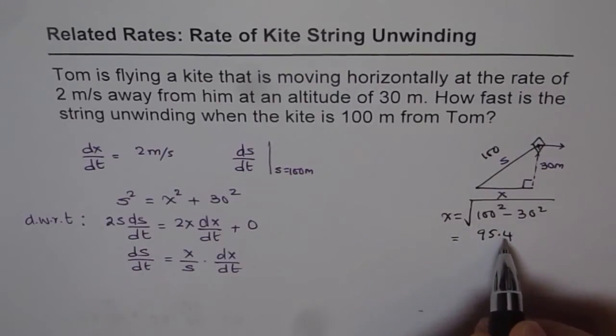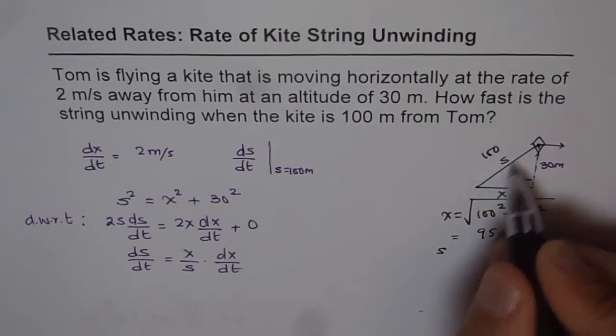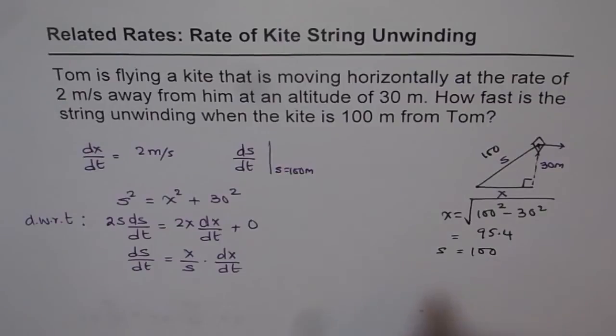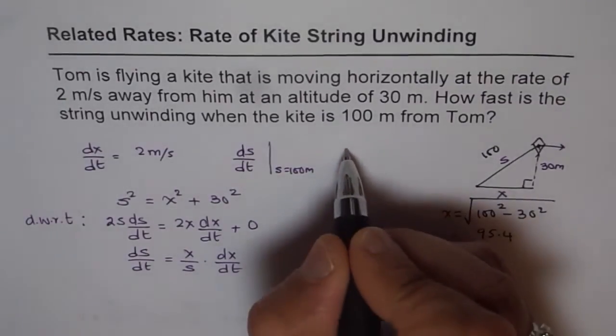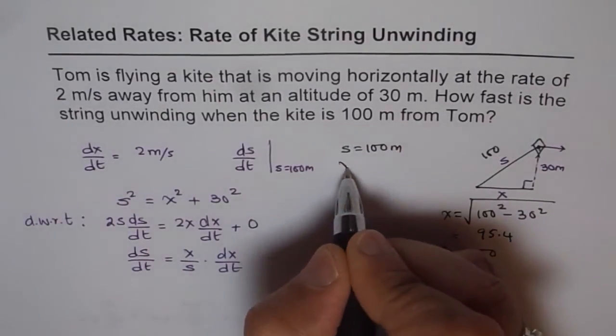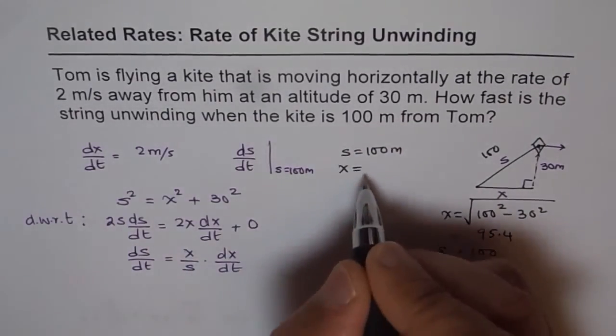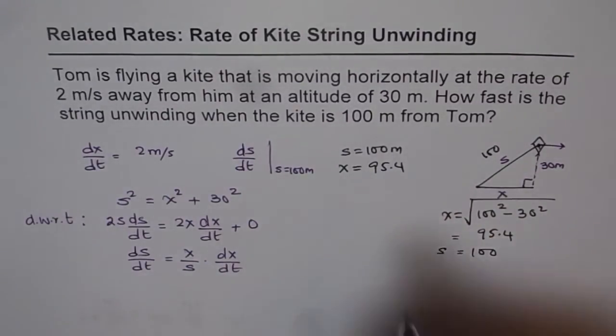So we know x is 95.4. So we have all these values. So we know at this instance, when s equals 100 meters, at that time x, the horizontal distance, is 95.4 units. The units here are meters.